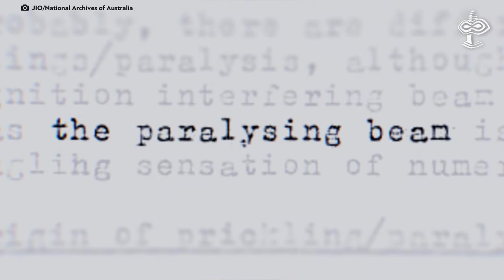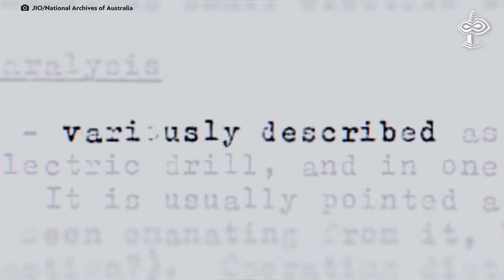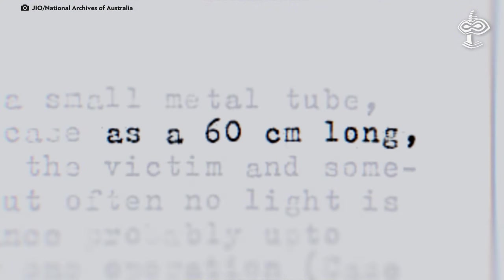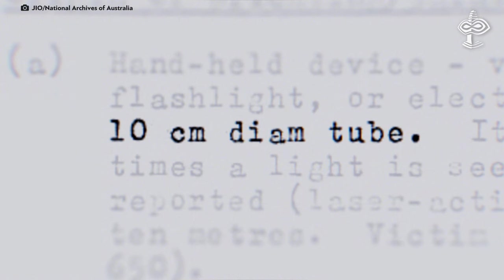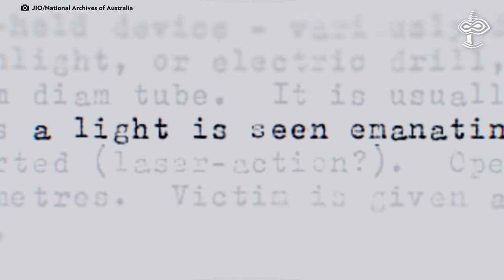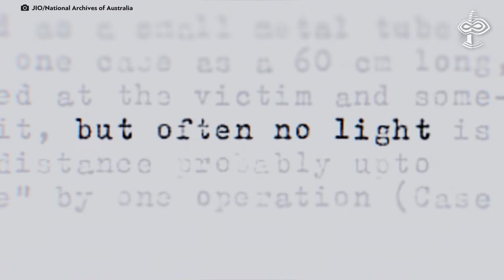Quote: Such a handheld device, variously described as a small metal tube or flashlight, and in one case as a 60-centimeter-long, 10-centimeter-diameter tube. It is usually pointed at the victim, and sometimes a light is seen emanating from it, but often no light is reported.